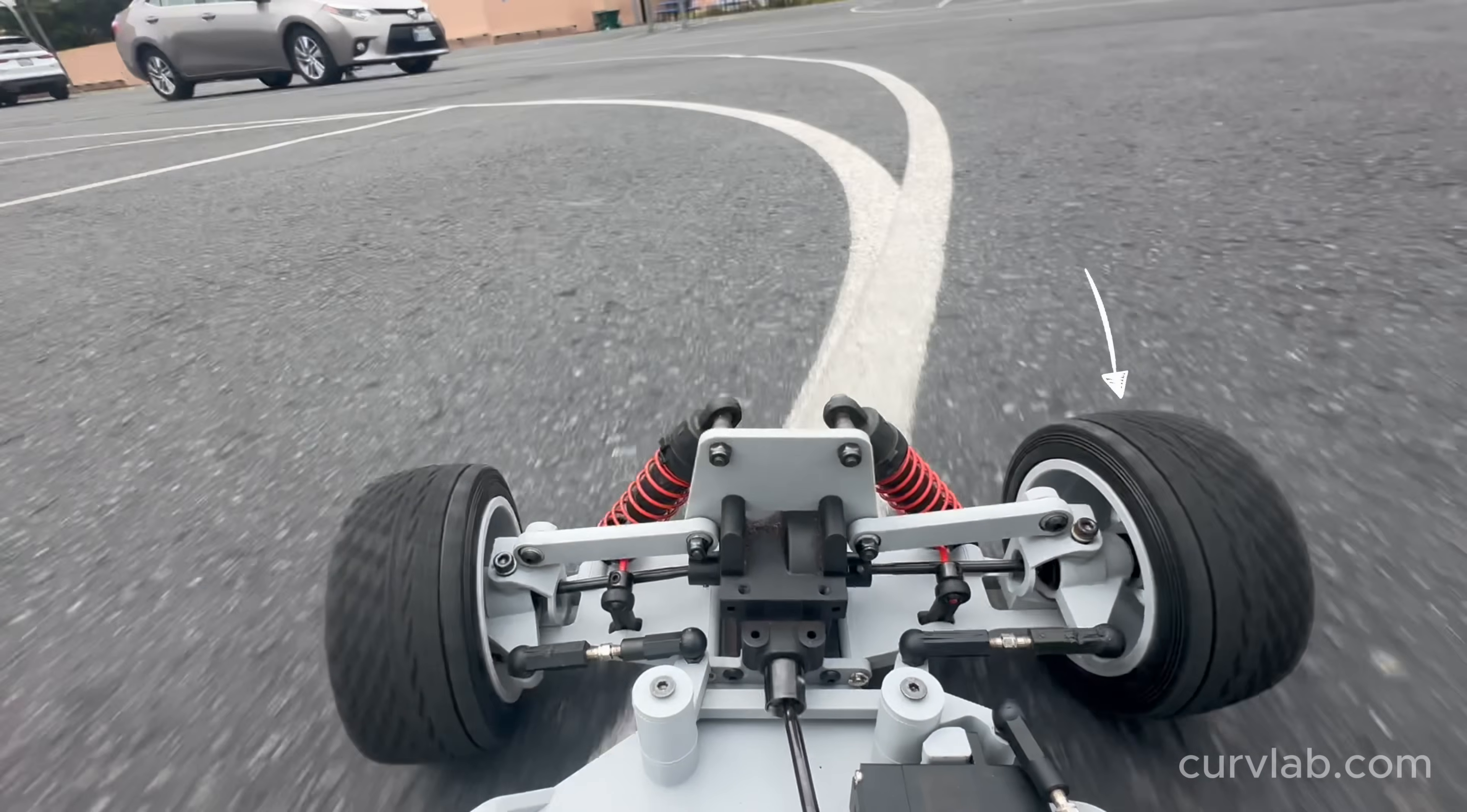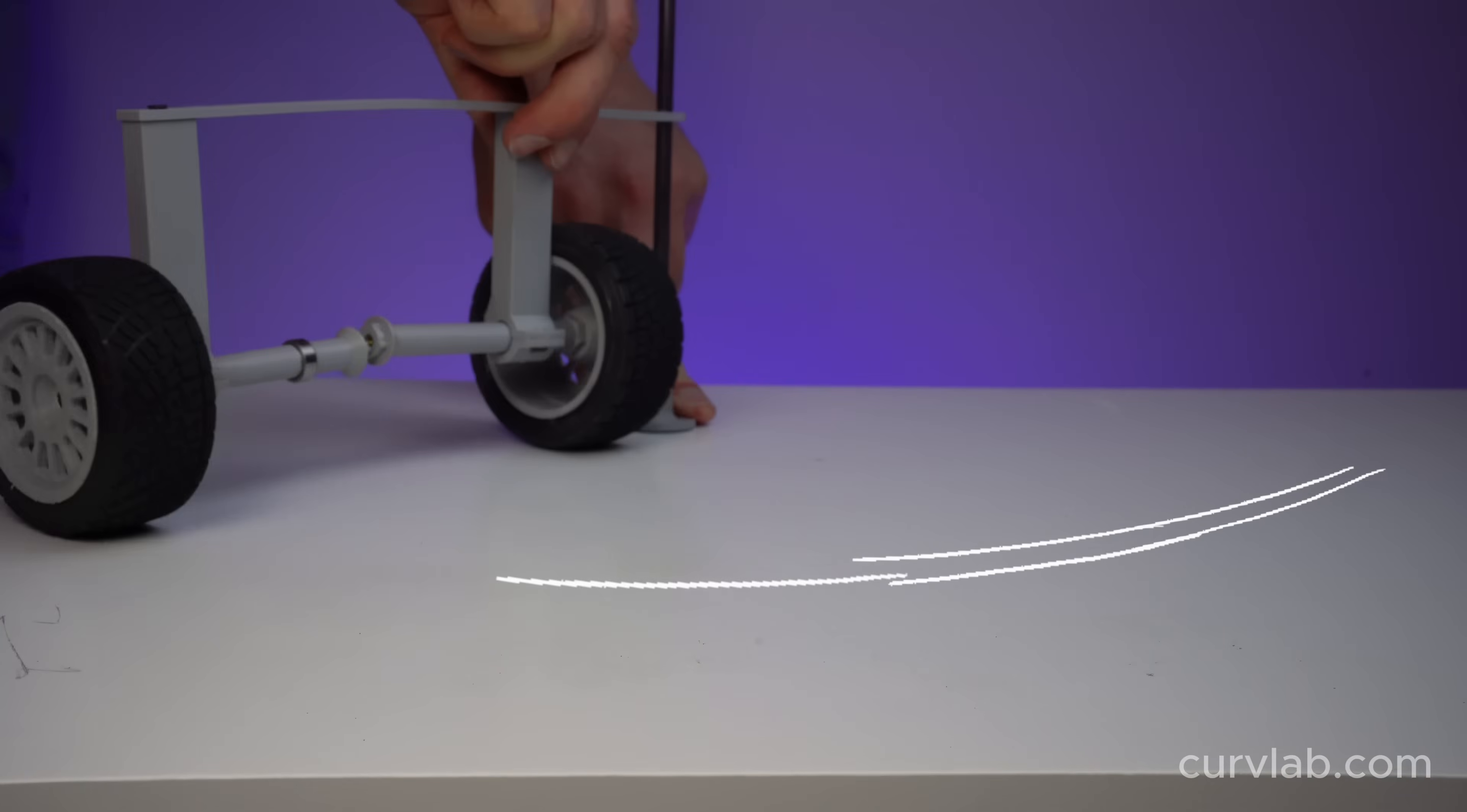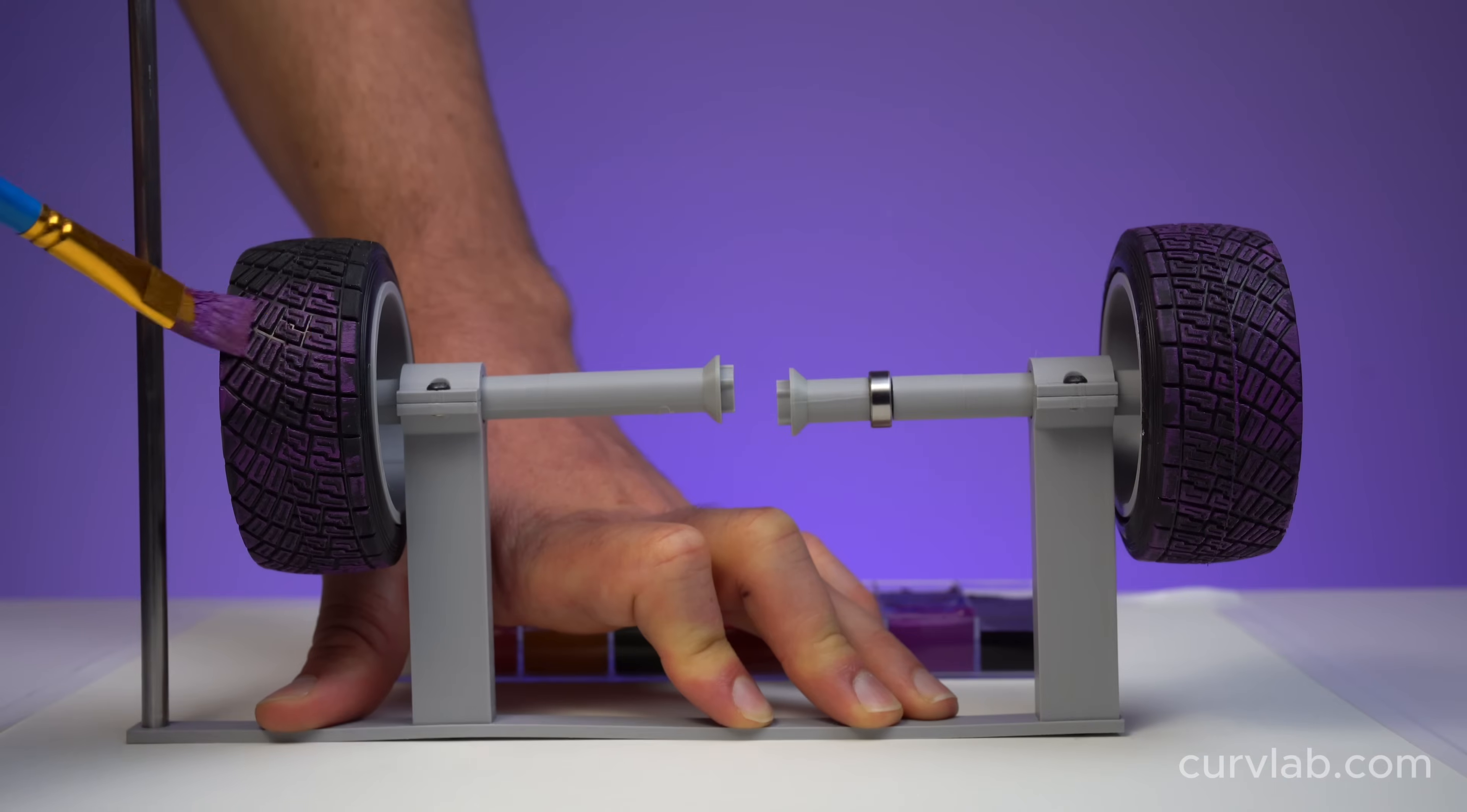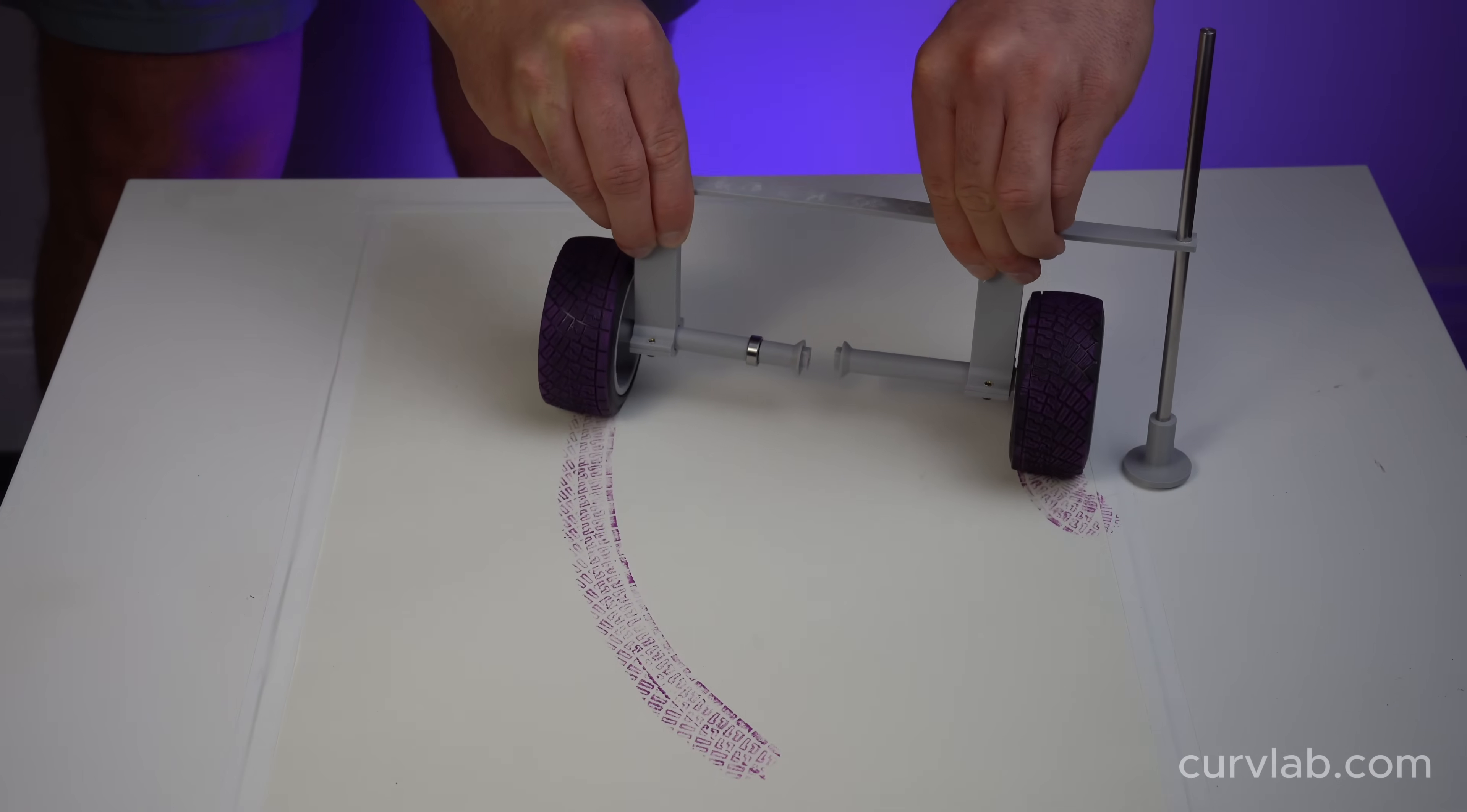When a car turns, the wheel on the outside of the turn traces a larger circle and therefore has to travel a farther distance and spin faster than the wheel on the inside of the turn. We can see this really clearly if we paint both wheels and trace out the path these wheels take during a turn on a sheet of paper.